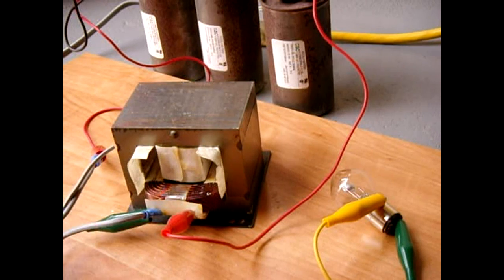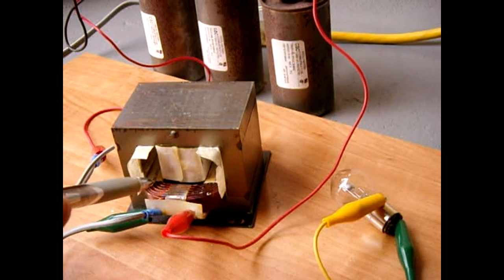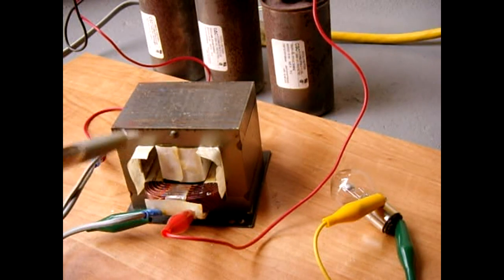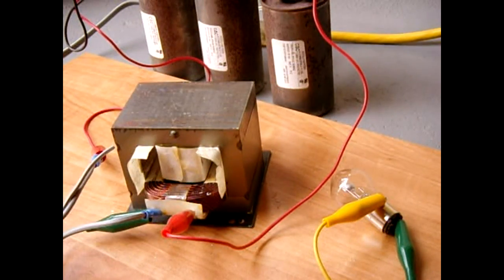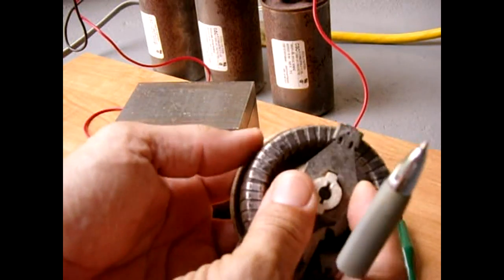You could take some 18 to 20 gauge wire and wrap 400 to 500 turns around the toroid like you see here, and you can make your own variac fairly easily, especially if you have one of these laying around that you can use the wiper from.